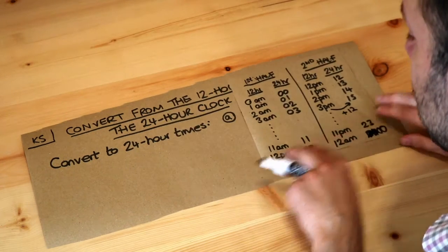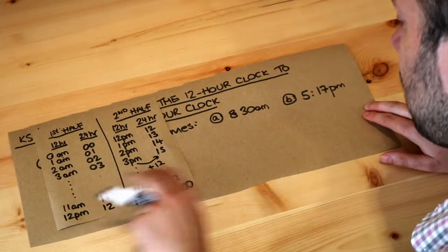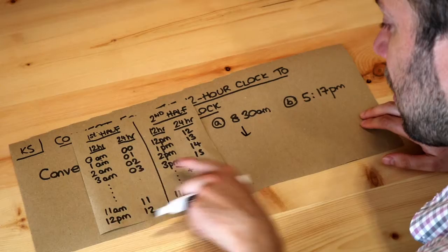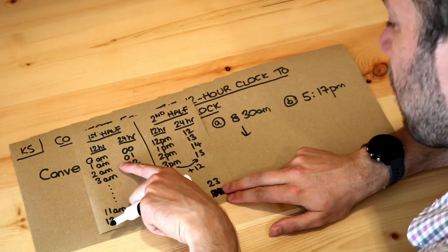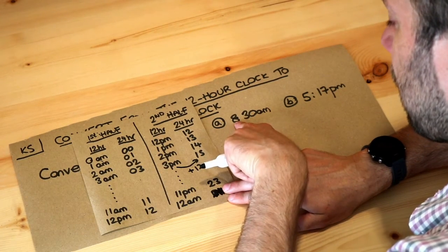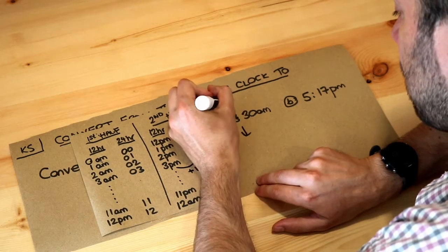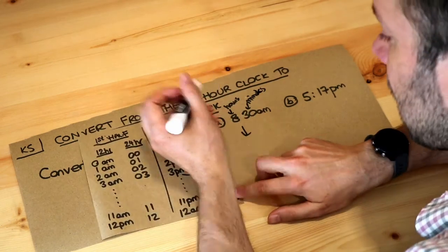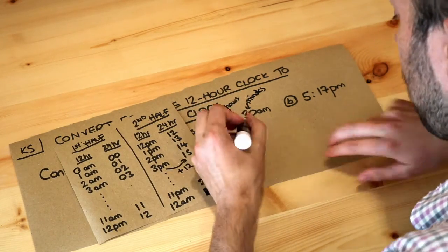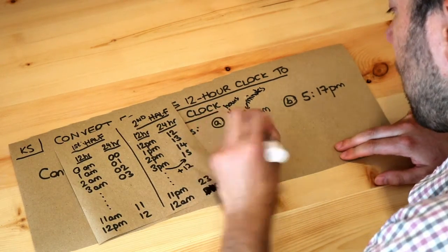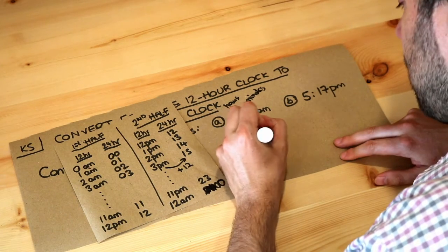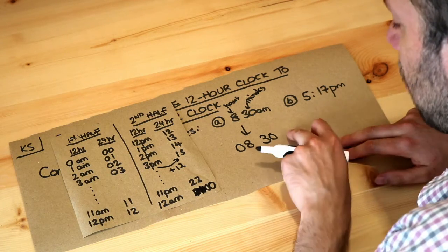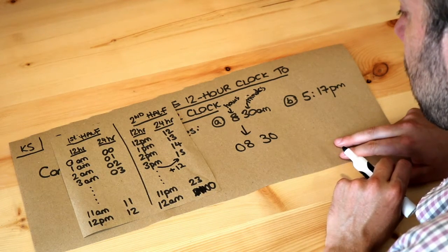Let's use that to answer these questions. We want to convert these to 24-hour times. We've got 8:30 AM. Now AM is in the first half of the day, and remember I said you don't need to change the hours. 8 is the hours, 30 is the minutes. So the 8 stays as 8 but we need to put a zero on the end. Then the minutes just stay as 30 minutes. Because this is a 24-hour time, it just stays as 0830. We don't put AM or PM on the end.